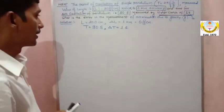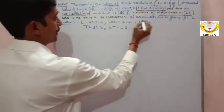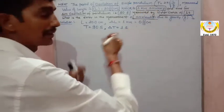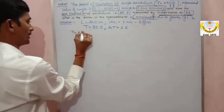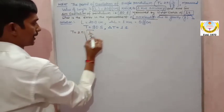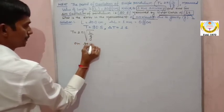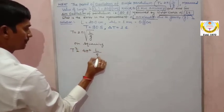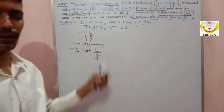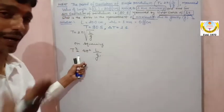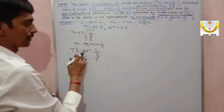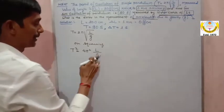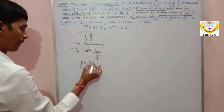Now let's calculate. They asked to find the acceleration due to gravity in terms of percentage error. We have T = 2π√(L/g). On squaring: T² = 4π²L/g. We rearrange to g = 4π²L/T². Error in time and error in length are already given; we need to find the error in gravity.